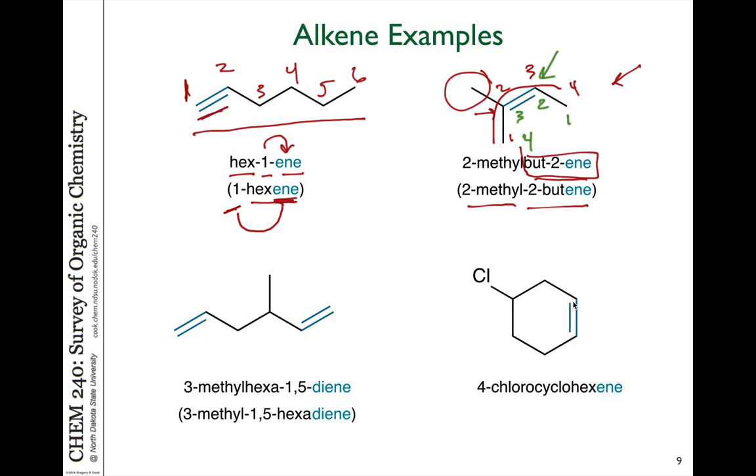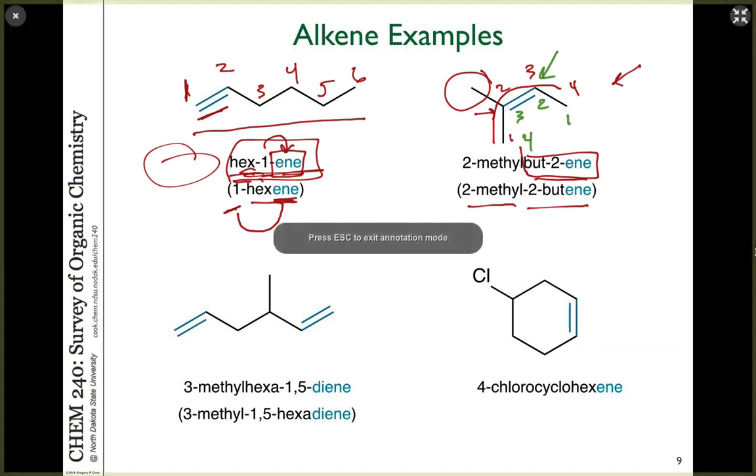Always double bonds get priority over other substituents when naming molecules in terms of numbering. So you always number an alkene or an alkyne for that matter from the side of the chain closest to the end, regardless of where there's other substituents. So the double bond gets precedence. And that's kind of indicated here because ene or the double bond functionality is actually part of the parent name, not as a substituent in front. So it's part of the parent name, it gets priority. That's sort of a general rule of thumb that seems to always hold true in many cases.